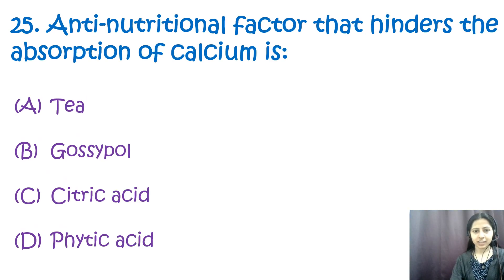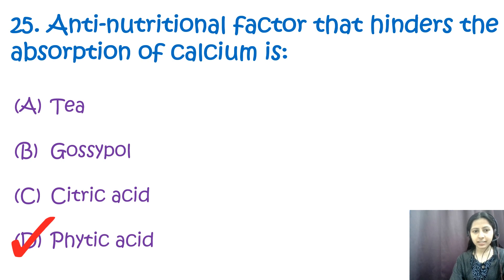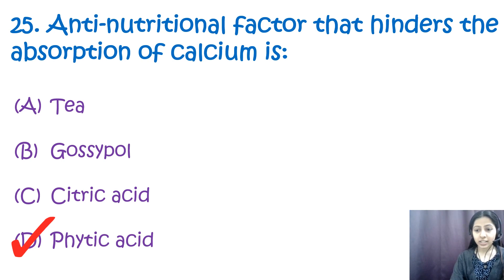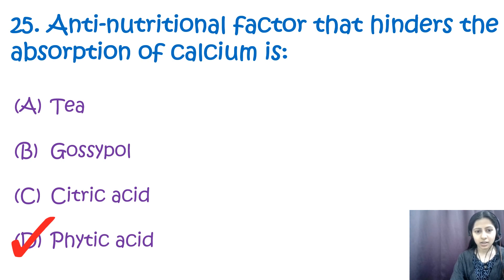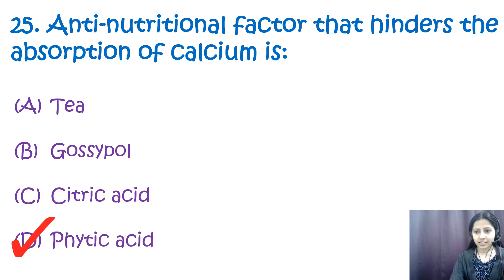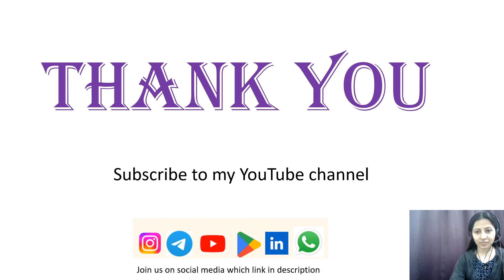Question number twenty-five: the anti-nutritional factor that hinders the absorption of calcium is — options: a) tea, b) gossypol, c) citric acid, d) phytic acid. The correct option is d, phytic acid. Phytic acid is an anti-nutritional factor that hinders calcium ion absorption. Citric acid enhances calcium absorption by forming soluble calcium citrate complexes. Gossypol is a phenolic compound in cottonseed that can reduce calcium absorption but not to a significant level. Tea contains tannins that bind calcium ions and reduce absorption, but the effect is not considered highly significant.